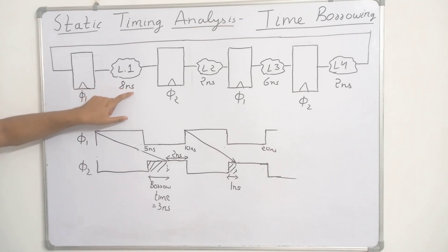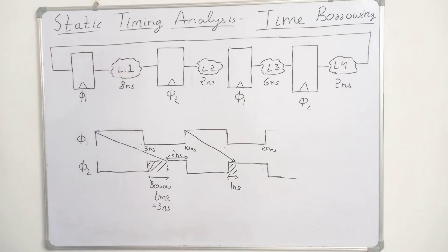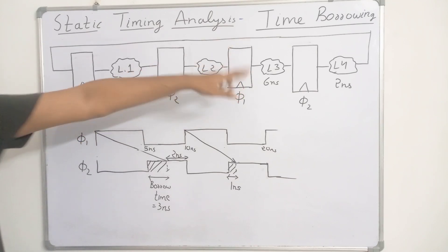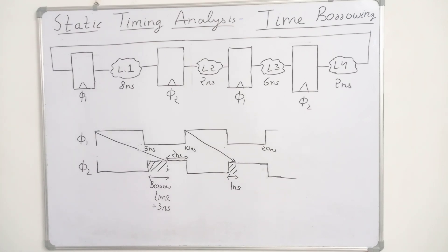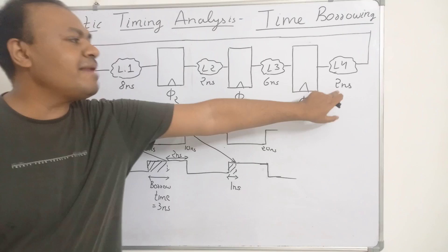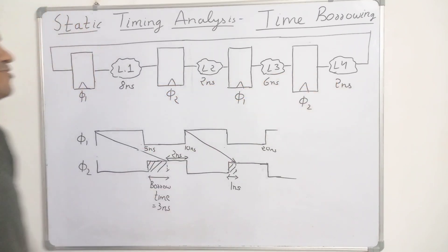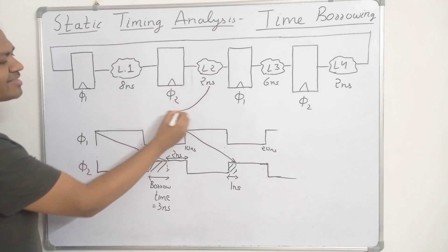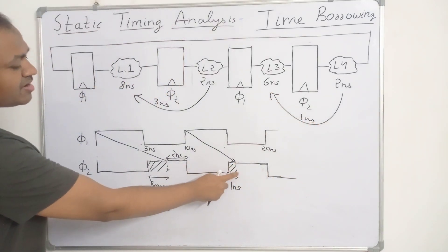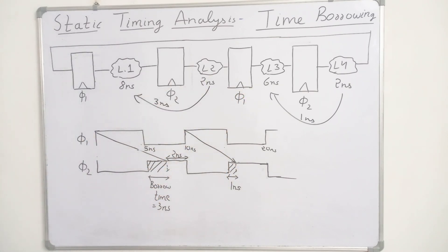The delay on path L1 is 8 nanoseconds, giving 3 nanoseconds of extra delay, but the delay on path L2 is only 2 nanoseconds, satisfying the timing requirement for the third latch with no violation. Similarly, for path L3 at 6 nanoseconds, we can borrow 1 nanosecond from path L4. So path L1 borrowed 3 nanoseconds from path L2, and path L3 can borrow 1 nanosecond from path L4.